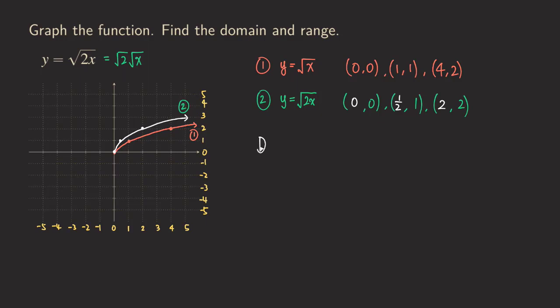The last step is finding the domain and range. As you can see from the graph, they are the same as the previous example: domain is [0, ∞) and range is also [0, ∞). That's it for these two examples. Next time we will do more examples with a mix of different transformations. Thank you for watching.